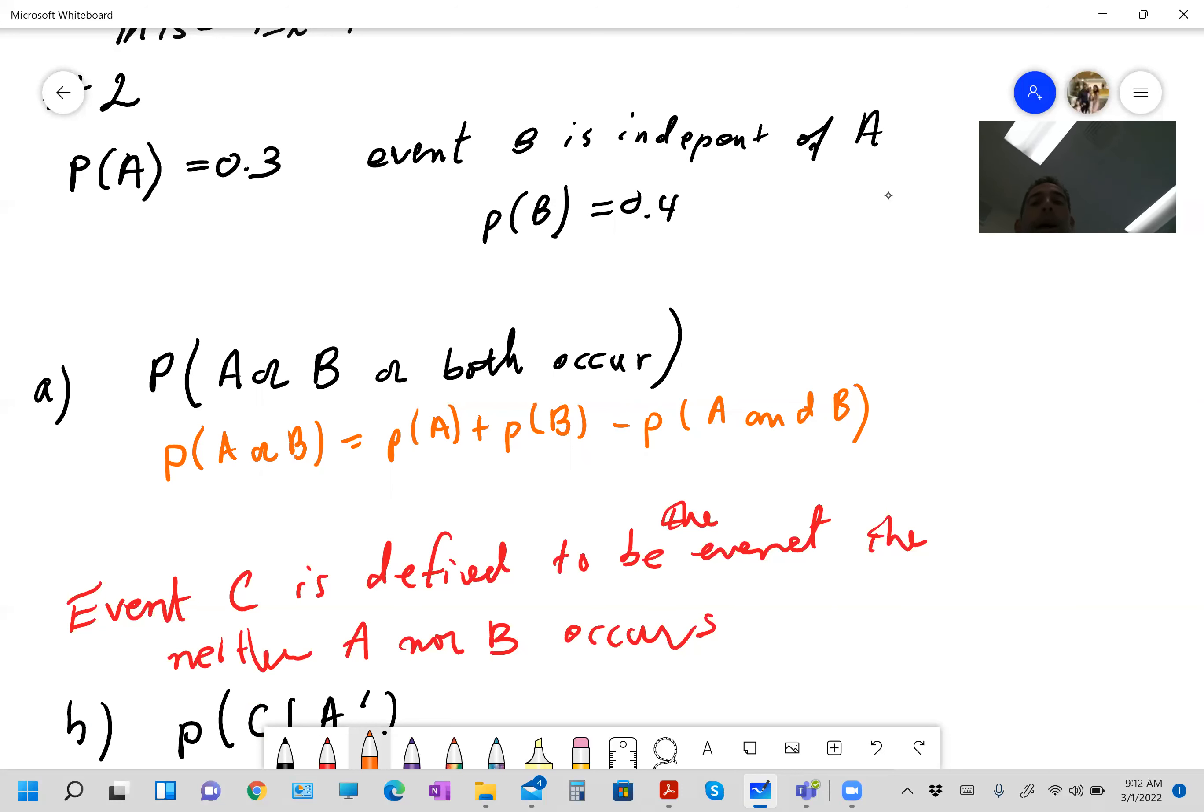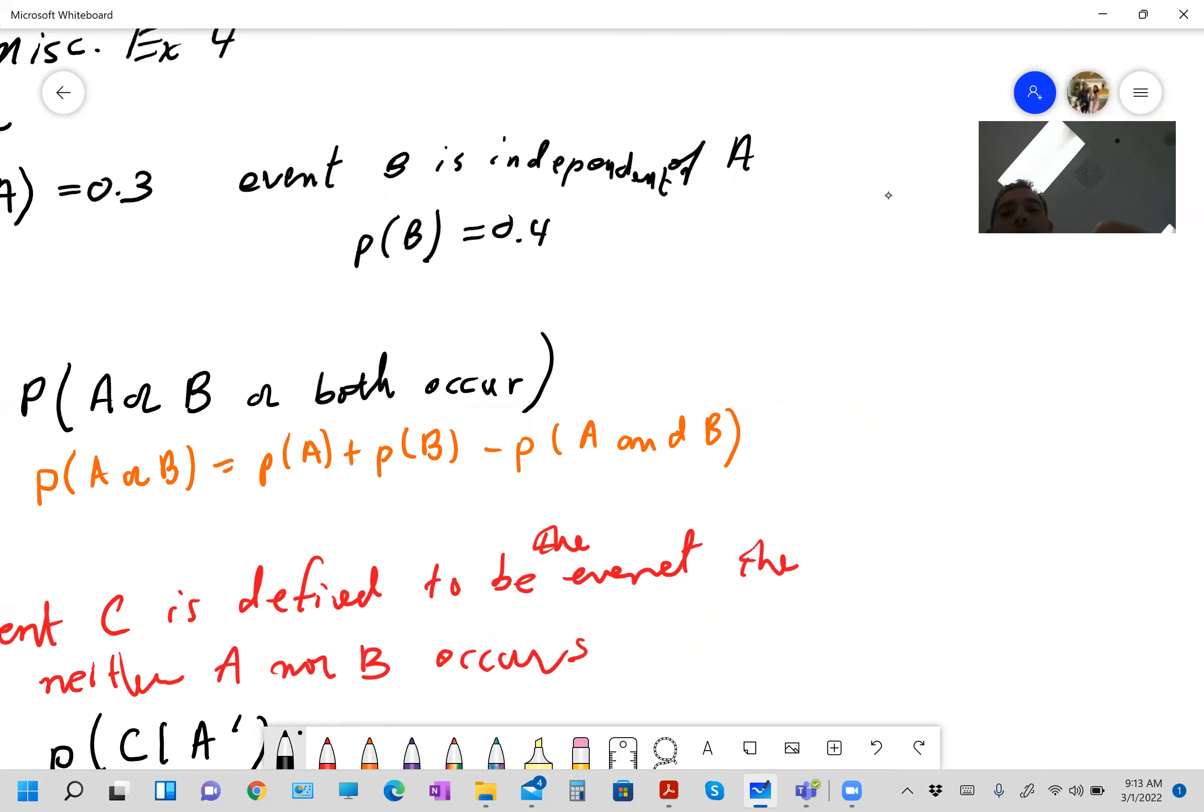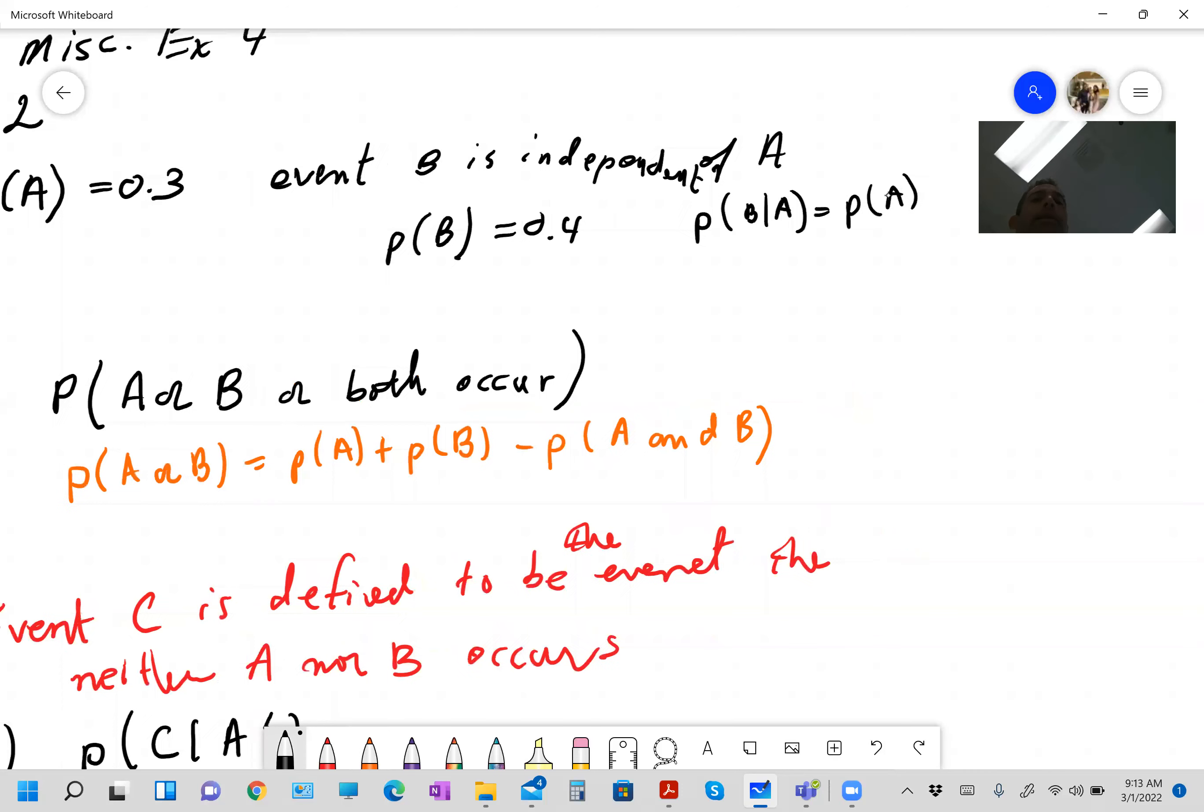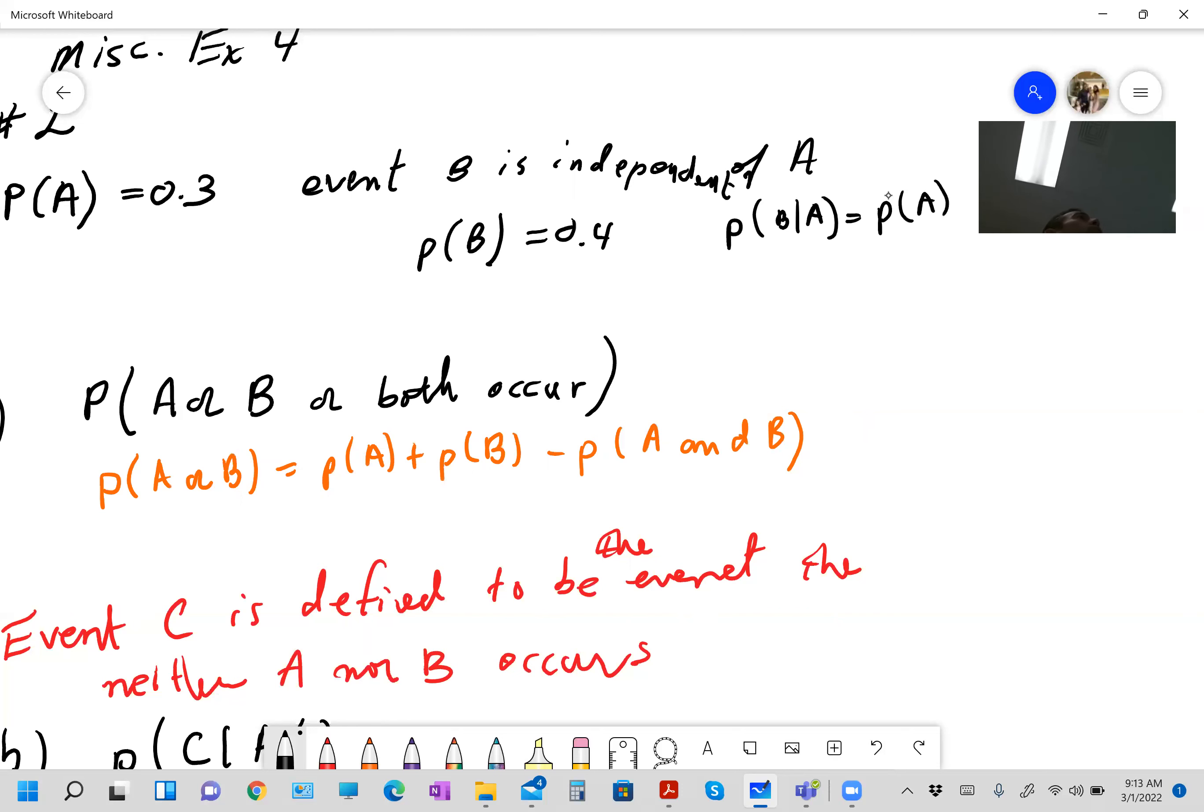Now a few notes here. Event B is independent, I didn't spell independent right, I kind of missed a bunch of letters. So if event B is independent of A, a few things are true. Now you got to be careful here. The probability of B given A must equal the probability of A. However, they didn't say that event B and A were mutually exclusive.